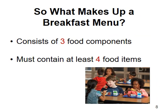The breakfast menu must consist of three food components and must contain at least four food items. When implementing Offer vs. Serve, the menu planner must offer the student at least four food items from the three required food components, and the student must select three items. One of the items is required to be at least a half a cup of fruit or vegetable to have a reimbursable breakfast.